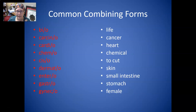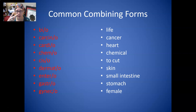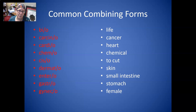Here are some examples of common combining forms. Bio is life. Carcino is cancer. Cardio is heart. Chemo is chemical. Cis is to cut — think scissors. Dermato is skin. Entero is small intestine. Gastro is stomach. And gyneco is female — remember, the gynecologist is a female doctor.